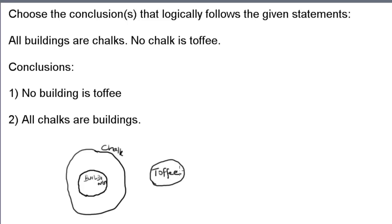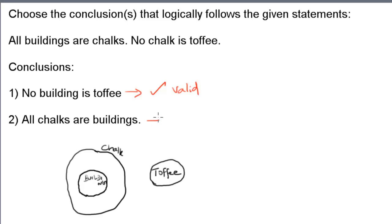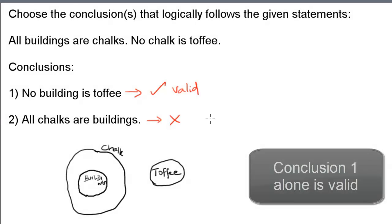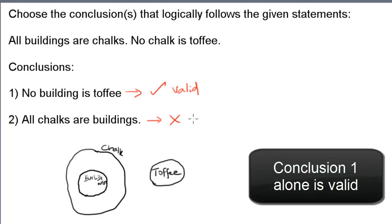Now let's look at the conclusions. Conclusion 1 says 'no building is toffee,' which is very much valid because the building and toffee circles do not intersect each other and one is not a subset of the other — so conclusion 1 is valid. Conclusion 2 says 'all chalks are buildings,' which is not valid because building is a subset of chalk and not vice versa. So conclusion 2 is invalid.